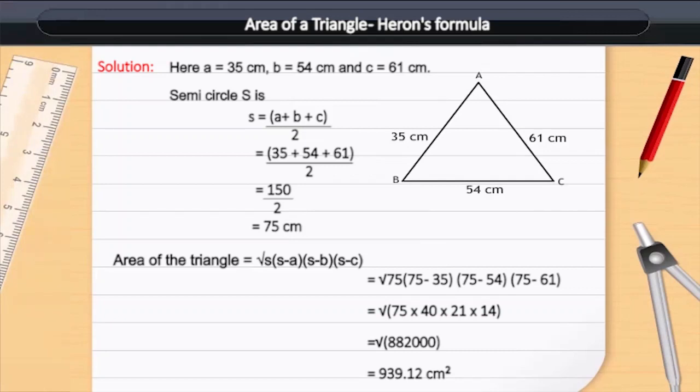Is equal to square root of 75 times 40 times 21 times 14, equals square root of 882000, equals 939.12 cm squared.